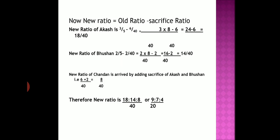New ratio equals old ratio minus sacrifice ratio. New ratio of Akash: his old ratio is 3 by 5 minus sacrifice of 6 by 40. Making the denominators equal, it will be 18 by 40. Similarly, new ratio of Bhushan is 2 by 5 minus 2 by 40, which equals 14 by 40.